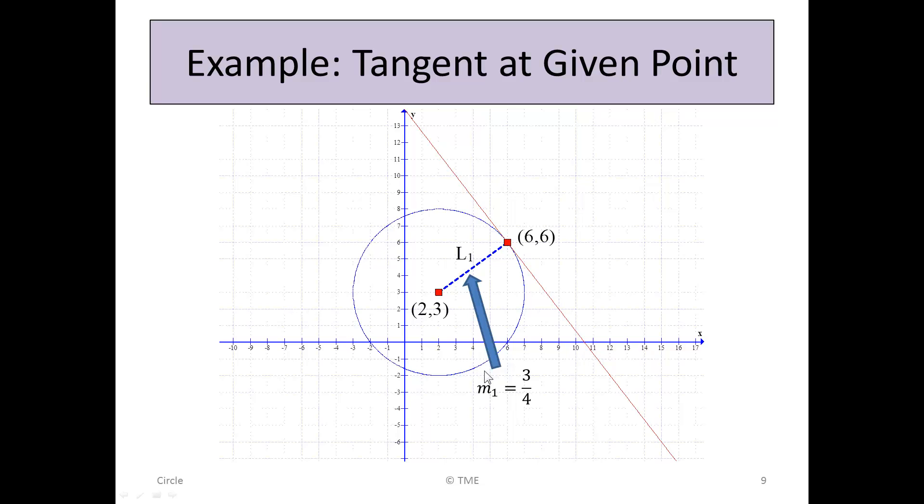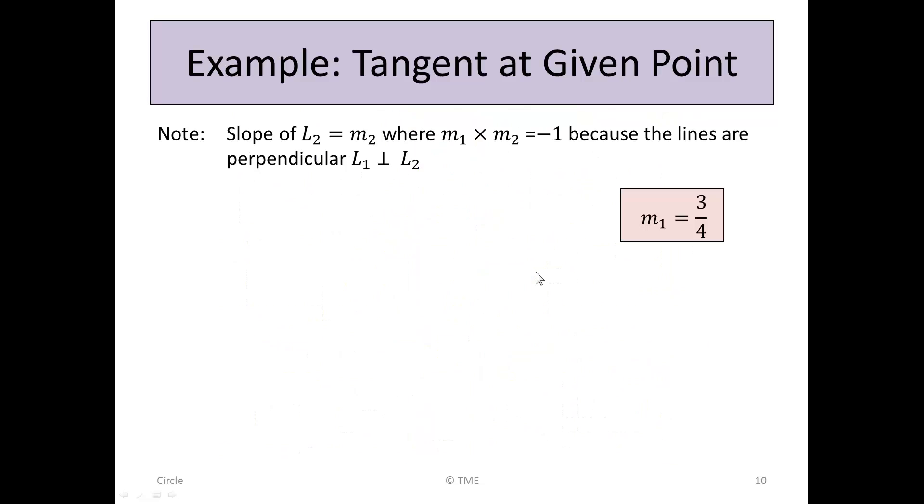So if we look at it, we can see that that's the slope of the line L₁, positive slope, 3/4. But we were interested in the red line here, so we need to find the slope of that line. Now, there's a note that states that the slope of L₂ is M₂, where M₁ × M₂ = -1, because the lines are perpendicular. When any two lines L₁ and L₂ are perpendicular, shown by this symbol here, we note that the two M values, when multiplied by each other, give -1.